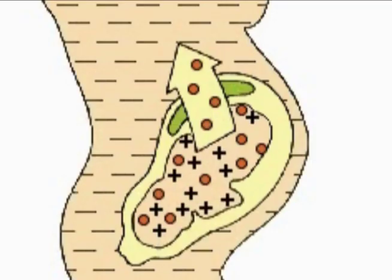Should the antigen enter the bloodstream of an RH negative person, serious consequences follow. If an RH negative woman is impregnated by an RH positive man, the fetus may be RH positive too.